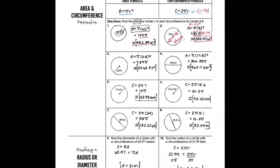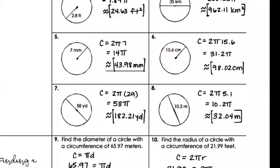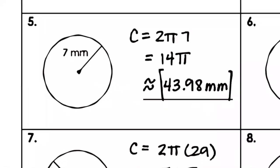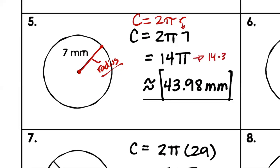Numbers five through eight ask for circumference. For number five, they give us the radius, so we use Circumference = 2πr. The radius is 7, so: C = 2 × π × 7 = 14π. Punching into the calculator: 14 × 3.14 ≈ 43.98 millimeters. Notice it's just millimeters, not millimeters squared — circumference is a distance around, not an area, so we don't square the units.